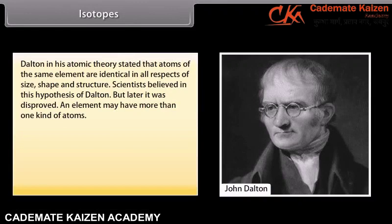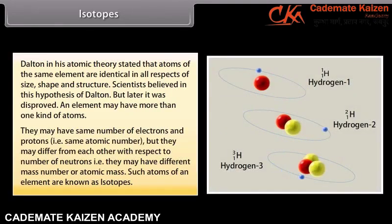Isotopes. Dalton in his atomic theory stated that atoms of the same element are identical in all respects of size, shape, and structure. Scientists believed this hypothesis, but later it was disproved. An element may have more than one kind of atom. They may have the same number of electrons and protons — that is, same atomic number — but they may differ from each other with respect to number of neutrons, meaning they may have different mass number or atomic mass. Such atoms of an element are known as isotopes.